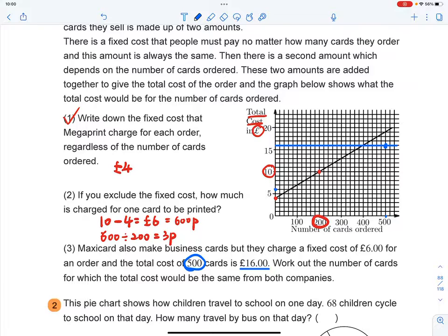Work out the number of cards for which the total cost will be the same for both companies. So guys, I have to connect these two blue points to find the intersection. Okay, let's see. These two points, I have to connect it.